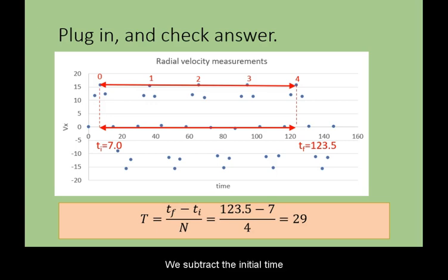We subtract the initial time from the final time, then divide the difference by the number of periods.